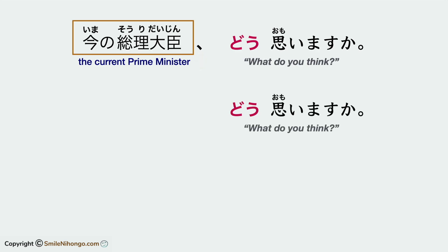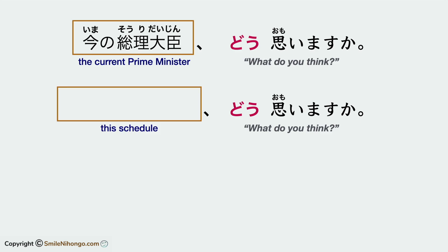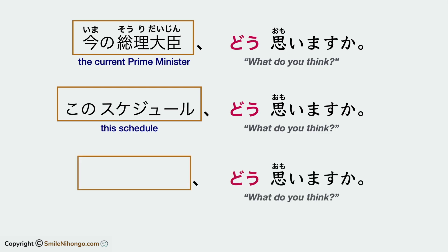Let me show you other example questions. If you are making a schedule for a work event or planning a trip with friends, you can ask: このスケジュール、どう思いますか? Or, if you are shopping with your friend and want to ask for their opinion about something you want to buy, you can ask: これ、どう思いますか? If it's not a thing but a place you want to rent, you can ask: ここ、どう思いますか?